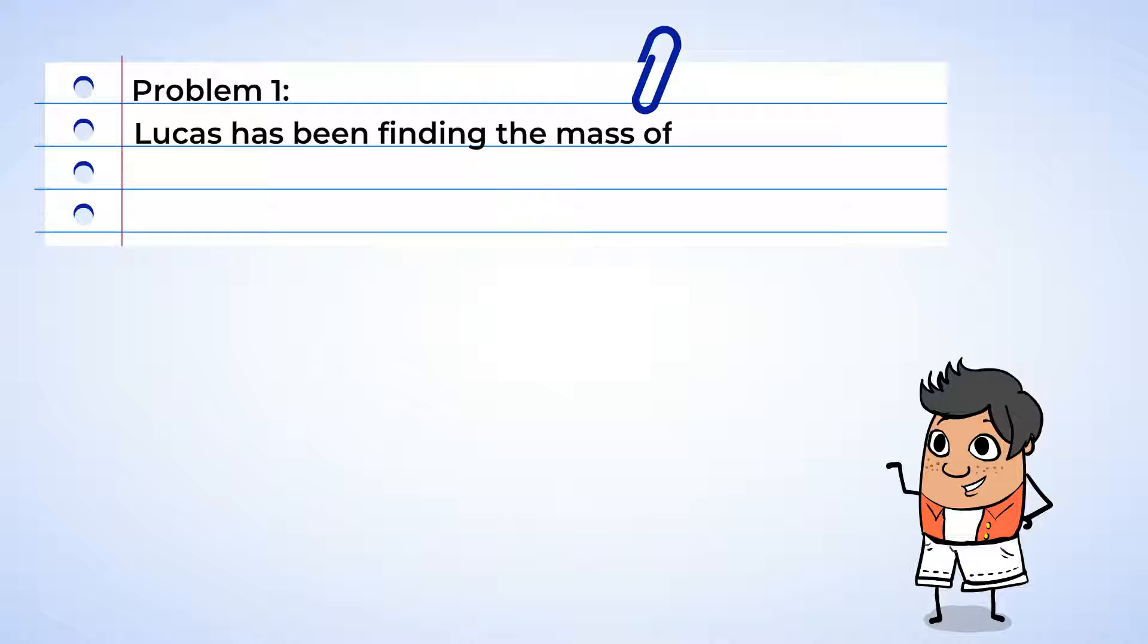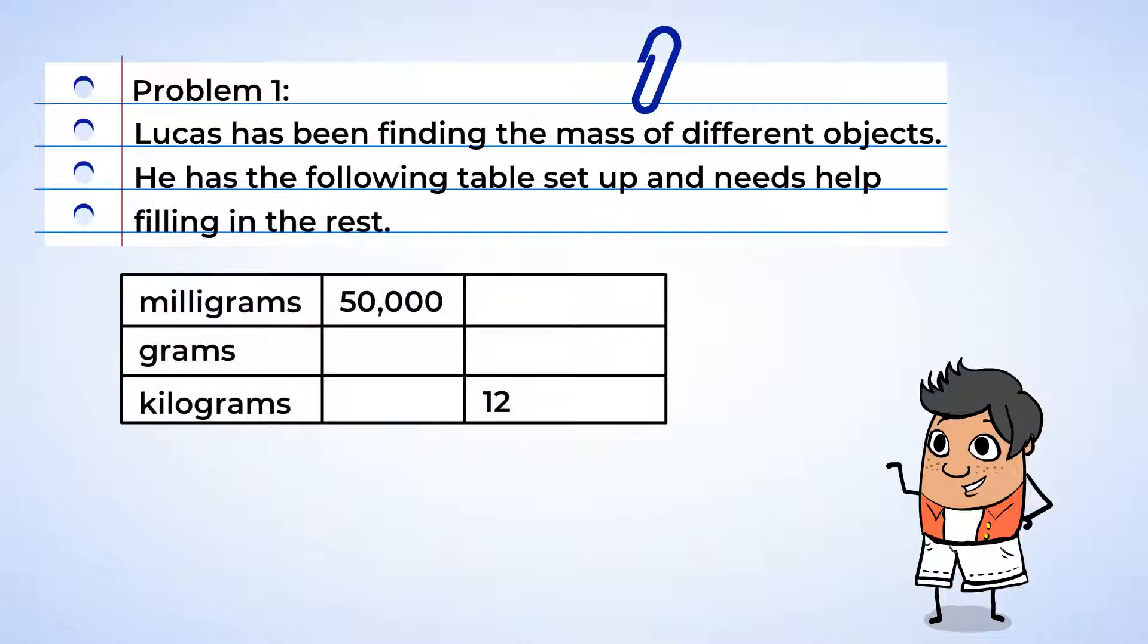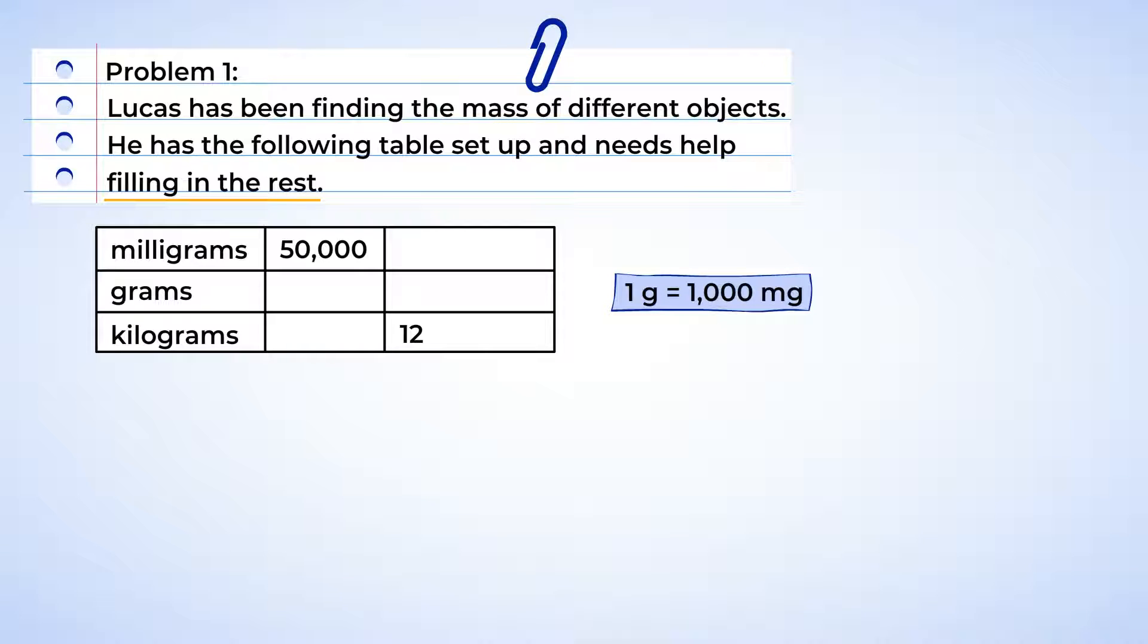Lucas has been finding the mass of different objects. And he has the following table set up and needs help filling in the rest. Let's see what we can do to help. The table shows different measurements of milligrams, grams, and kilograms. Well, we know that one gram is 1,000 milligrams, and we also know that one kilogram is 1,000 grams.